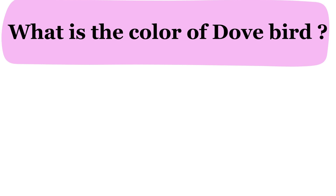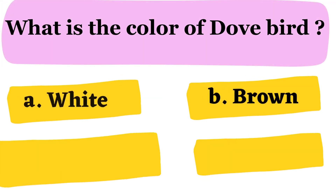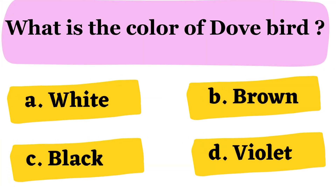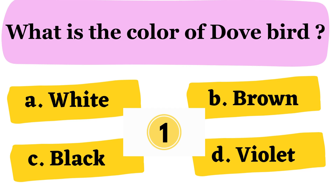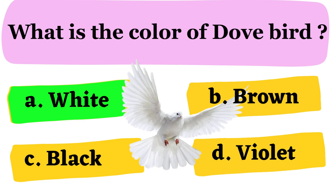Next question. What is the color of a dove bird? A. White B. Brown C. Black D. Violet. The correct answer is option A. White.